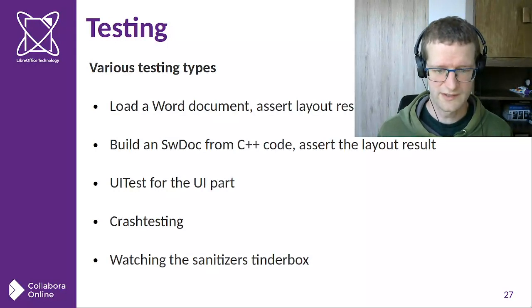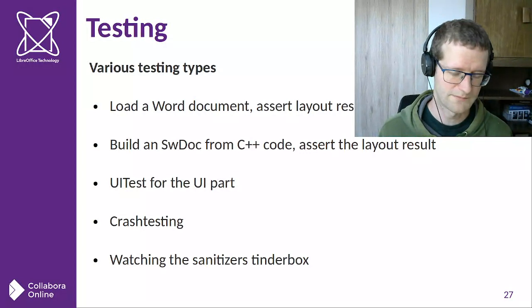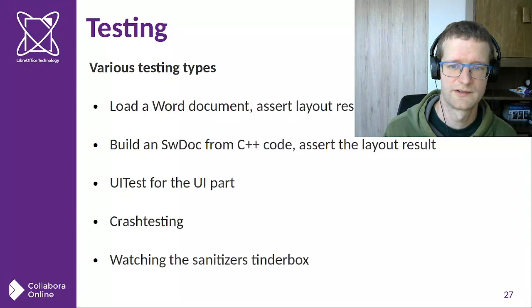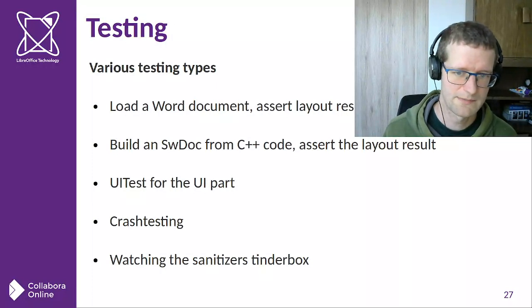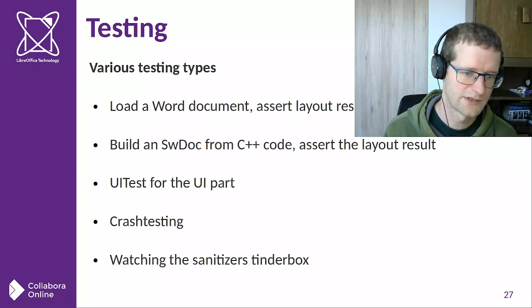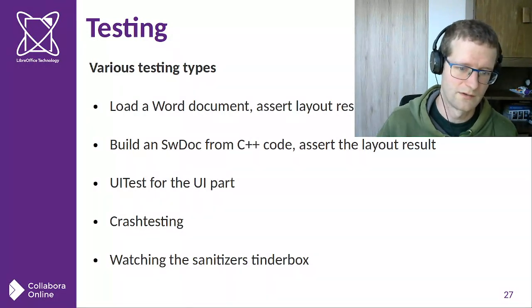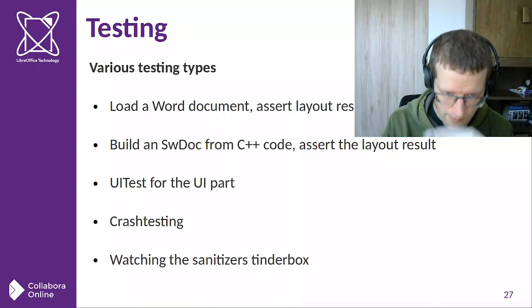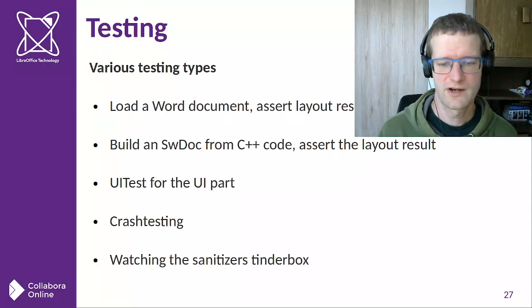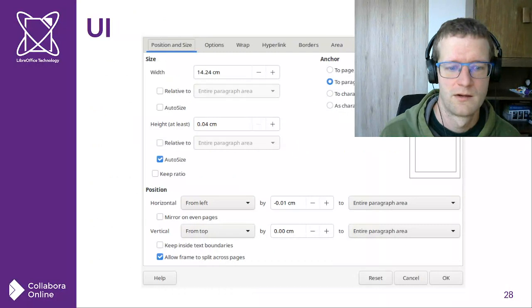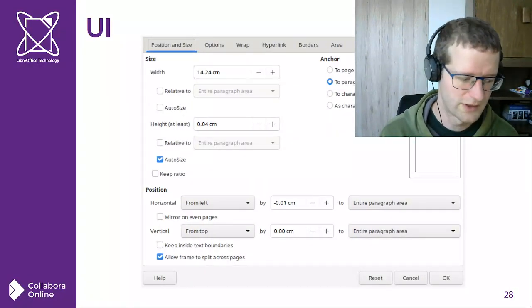For testing, we load Word documents and assert the layout so it can also be manually compared in Word. We build document models from C++ code and assert layout behavior, do UI testing for dialogs, and monitor crash testing via Tinderboxes. The Tinderbox building with sanitizers is especially helpful for catching memory problems. The UI itself is just one checkbox in the frame properties dialog — the UI part is easy.